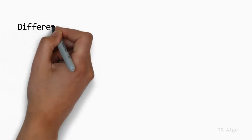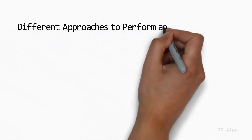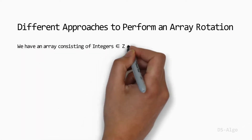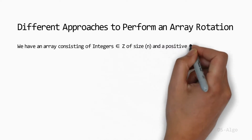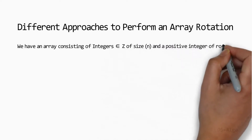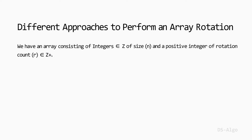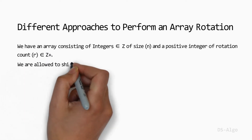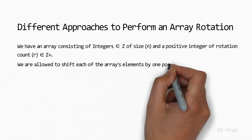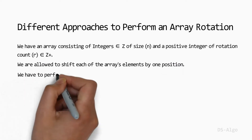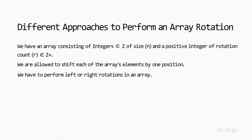In this video, I am going to discuss the different approaches to perform an array rotation. We have an array consisting of integers of size n and a positive integer of rotation count r. We are allowed to shift each of the array's elements by one position, and we have to perform left or right rotation in an array.